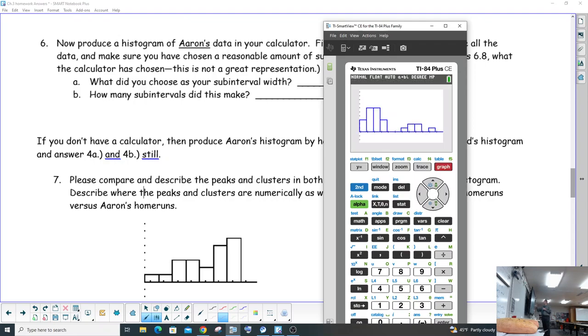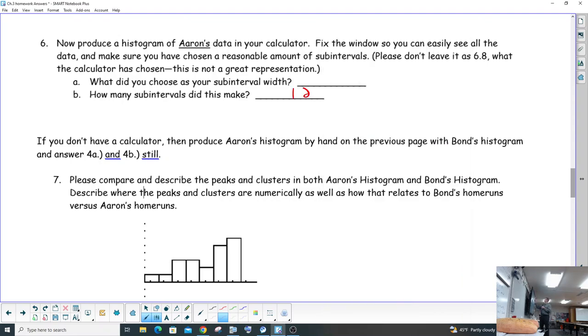And how many sub-width intervals did this make? So I push graph, and it made a lot. 1, 2, 3, 4, 5, 6, 7, 8, 9, 10, 11, 12. So 12, maybe if you use five. This isn't the Aaron's data, so that's why it's not matching up with yours exactly. But that's the idea. The sub-width is your x scale. And then how many intervals is just how many histogram bars did it make, basically.